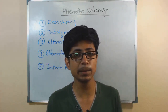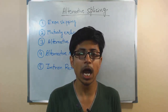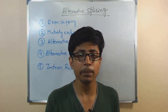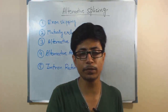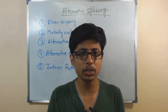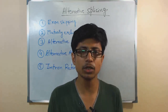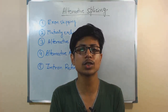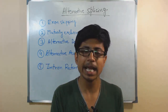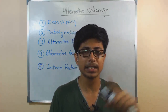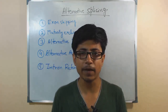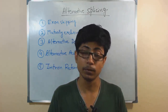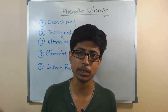Splicing is simply cutting out the introns from the pre-mRNA transcript of eukaryotic mRNA, because eukaryotic mRNA consists of two different segments: introns and exons. Introns are non-coding segments; exons are coding segments. So we need to cleave those introns out, join all the exons to get a mature mRNA, and then it will be 5-prime capped, 3-prime polyadenylated, and finally used for translation or protein synthesis.